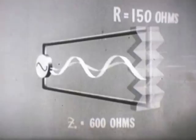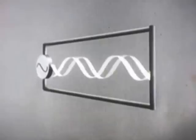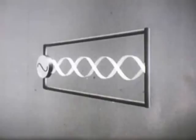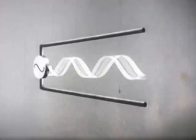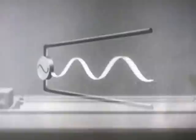Since reflected waves become greater as the difference between R and Z-sub-O becomes greater, a closed transmission line can be used to achieve maximum reflection. The shorted end of the line offers zero resistance and generates no heat. Mismatch of Z-sub-O and R is at a maximum, and the reflected wave reaches maximum amplitude. An open-ended line achieves the same result — the open ends offer maximum resistance to the passage of current, there is no power dissipation, and the incident wave simply bounces back at the end of the line to become a reflected wave of maximum amplitude.